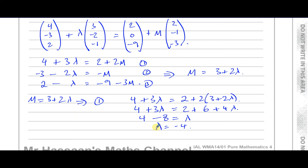I can find what mu is just to check. So mu = 3 + 2 times minus 4 = 3 minus 8, which is minus 5.